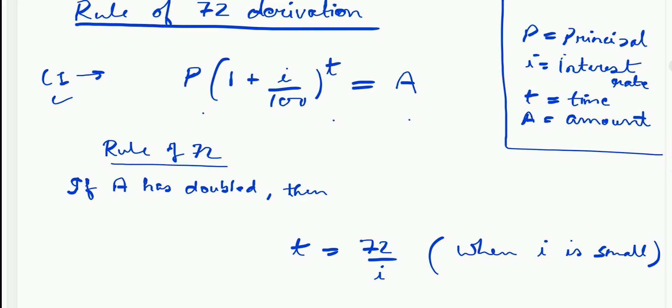Interpreting the formula, if principal P is compounded annually at the rate i for time period t, then the final amount is P times 1 plus i by 100, whole power of t.